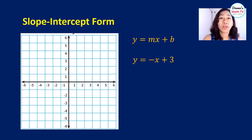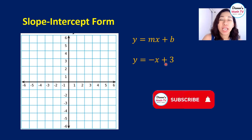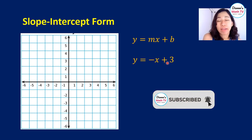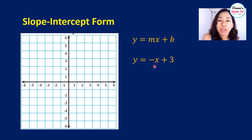Alright, so let's look at our first example here. We have y equals negative x plus 3 and we want to graph it. We want to graph this line over here. So first, we have to identify what is our m and what is our b, the slope and the y-intercept.